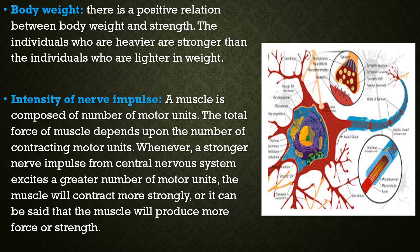Next is intensity of nerve impulse. A muscle is composed of a number of motor units. The total force of the muscle depends on the number of contracting motor units. Whenever a strong nerve impulse from the central nervous system excites more motor units, the muscle will contract more strongly and produce more force or strength. So the intensity of the nerve impulse also determines the amount of strength.